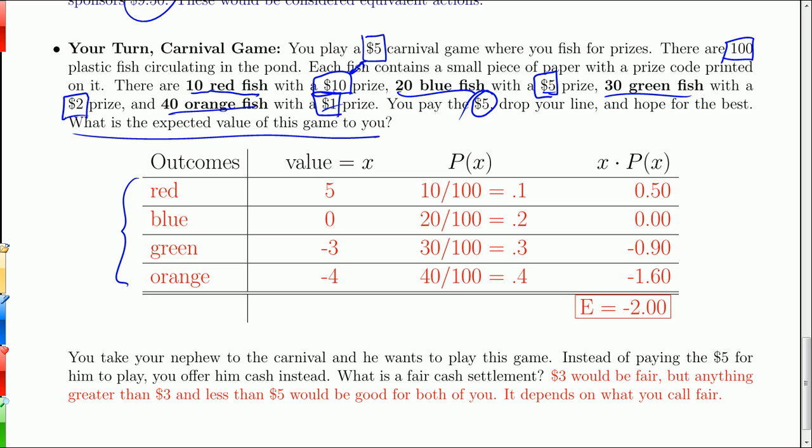The probabilities come from how many fish there are. There are 10 red fish, so that's 10 out of 100. There are 20 blue fish, 20 out of 100. 30 green fish, so .30 over 100 is the probability there. 40 orange fish, so 40 out of 100 for the orange.